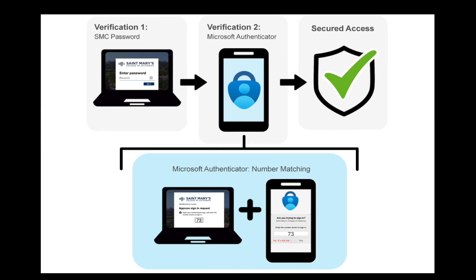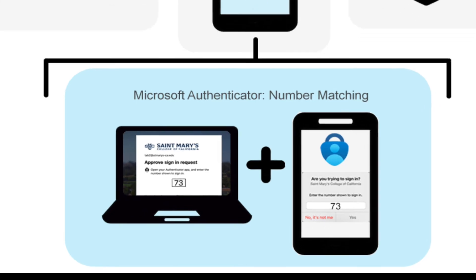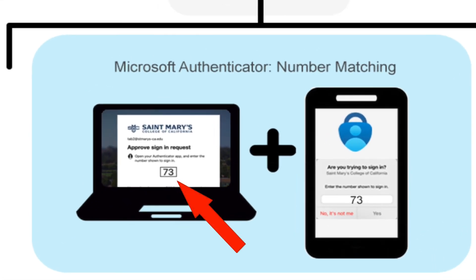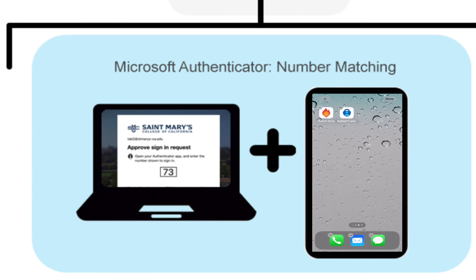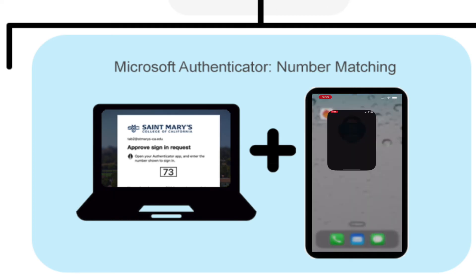Whenever you log into My St. Mary's, always have your phone nearby. When you log into your SMC apps, a number is going to pop up on your desktop screen. At the same time, your phone should display a notification from the Microsoft Authenticator app asking if you're trying to log in. Simply click on the notification to open the app and enter the number you see on your desktop screen. If your phone does not automatically notify you, open the app manually and enter the number from your desktop.